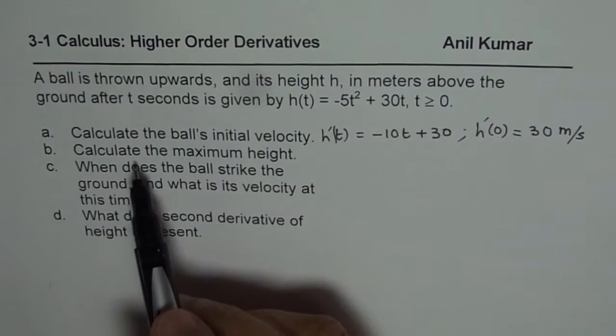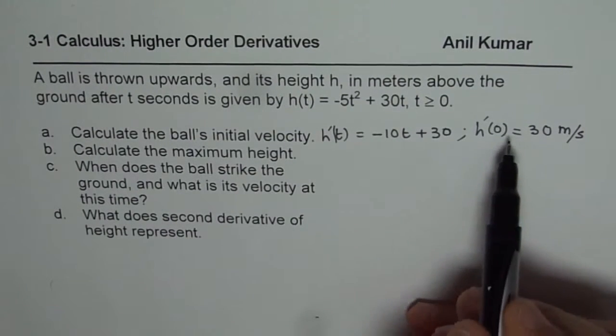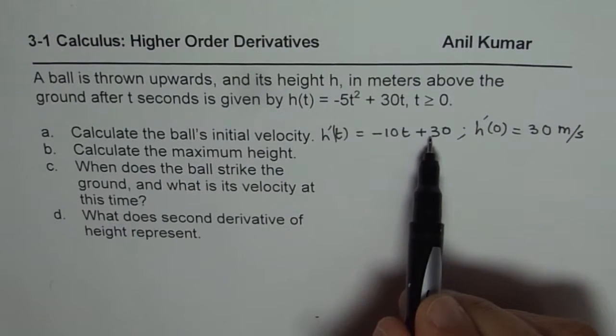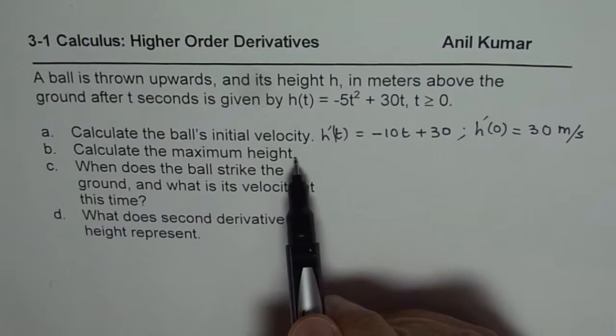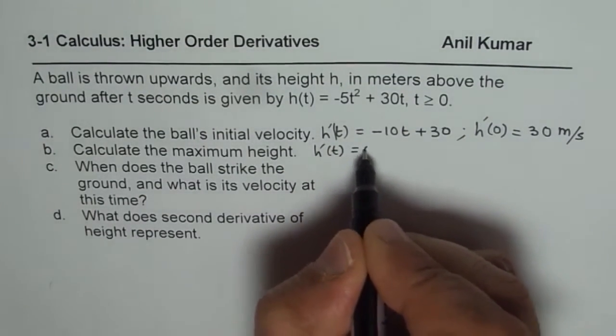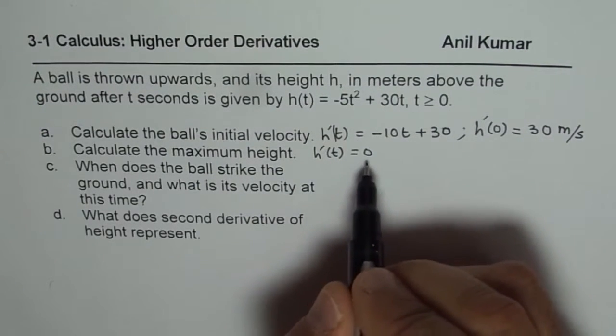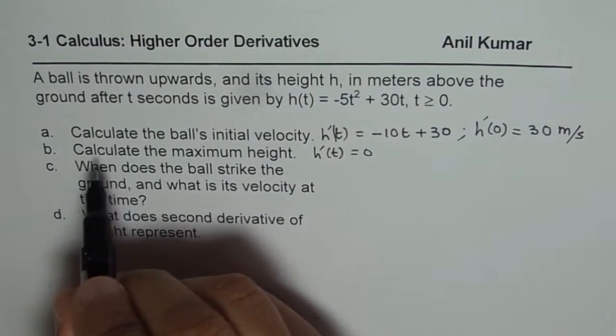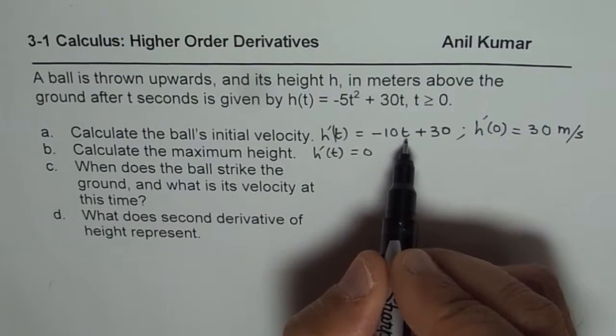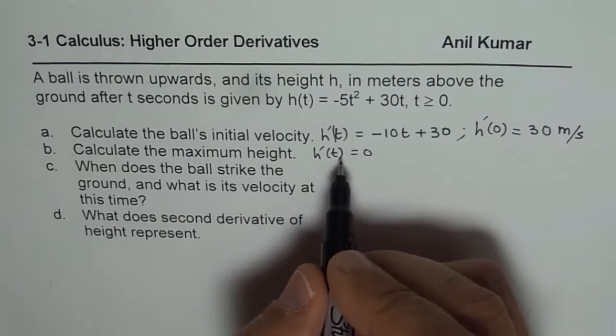Part B is calculate the maximum height. Now to find the maximum height, we can use this velocity function. Velocity will be 0 at maximum height since that is the turning point. So h'(t) = 0 will give you the maximum velocity time. So let us find when is the velocity 0, we will find the time here, substitute that time there and then calculate the maximum height.